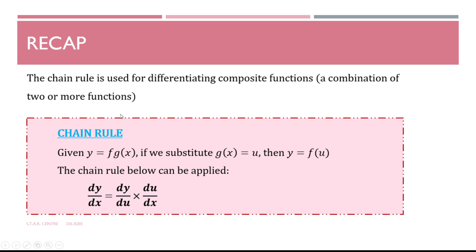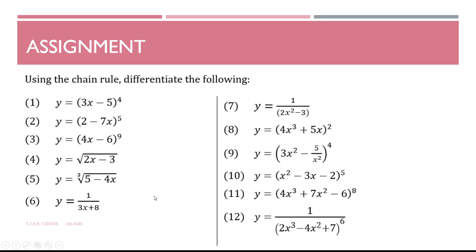That's it for the chain rule. To recap: the chain rule is mainly used for differentiating composite functions, and a composite function is a combination of two or more functions. The chain rule is dy/dx equals dy/du multiplied by du/dx. For the assignment, there are 12 questions to differentiate using the chain rule as instructed — even those of the form ax plus b to the power of n, where a shortcut exists, must be done using the chain rule.